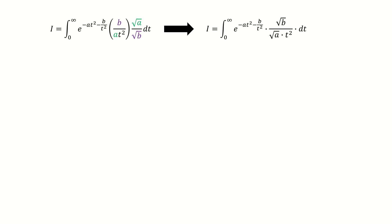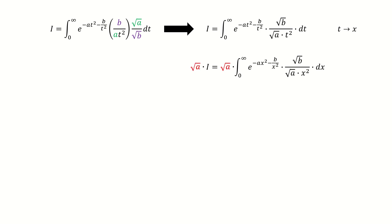Because this is a definite integral, we are free to choose the integration variable. So we choose x as the integration variable. After replacing the integration variable from t to x, we got here. And next, we multiply square root of a on both sides, so these two terms cancel out, and we got here.